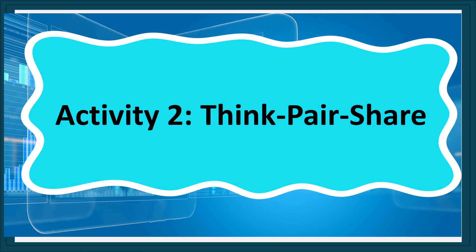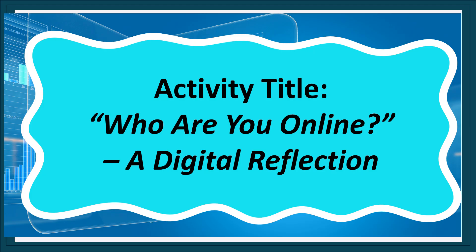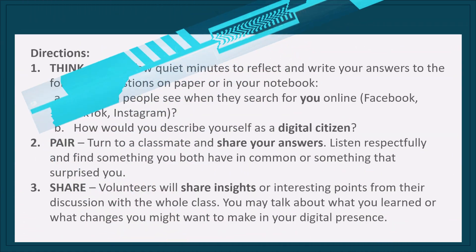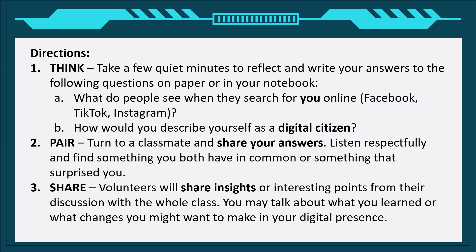Activity 2: Think, Pair, and Share. Activity title: Who are you online? A digital reflection. Directions — Think: Take a few quiet minutes to reflect and write your answers to the following questions on paper. 1. What do people see when they search for you online? (Facebook, TikTok, Instagram) 2. How would you describe yourself as a digital citizen? Pair: Turn to a classmate and share your answers. Listen respectfully and find something you both have in common or something that surprised you. Share: Volunteers will share insights or interesting points from their discussion.